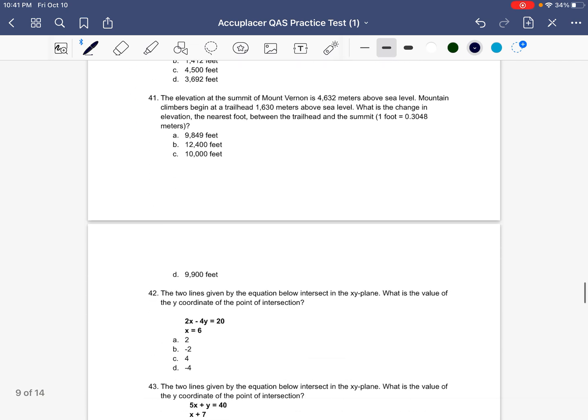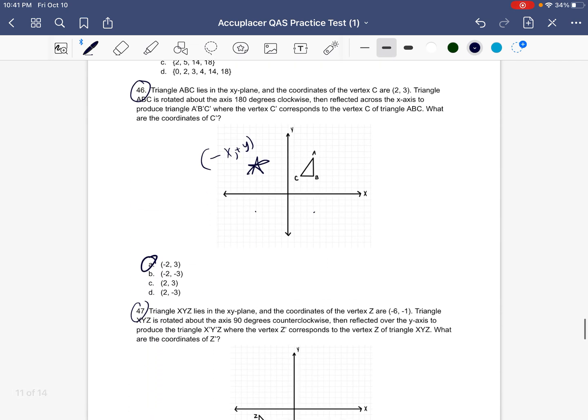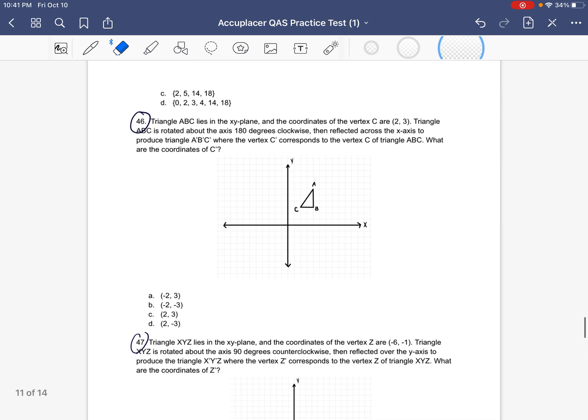Okay, so now let's go ahead and look at the other two questions, questions number 46 and number 47. So it says triangle ABC lies in the xy plane and the coordinates of the vertex C are (2, 3). Triangle ABC is rotated about the axis 180 degrees clockwise, then reflected across the x-axis to produce triangle A'B'C' where the vertex C' corresponds to the vertex C of triangle ABC. What are the coordinates of C'?